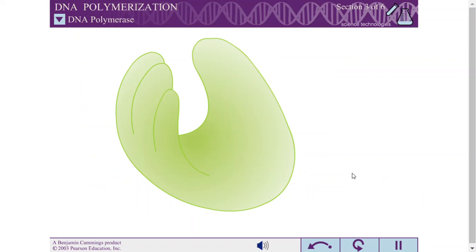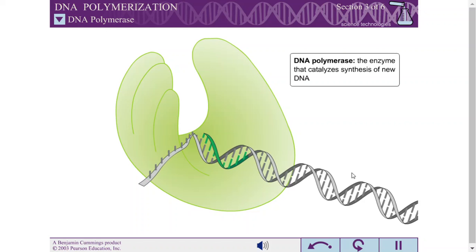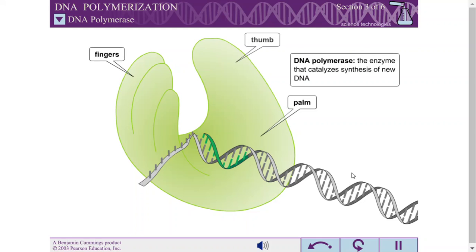The main enzyme of DNA synthesis is DNA polymerase. The DNA substrate sits in a large cleft of the DNA polymerase that resembles a partially closed right hand. Based on the analogy to a hand, three domains of the polymerase called the palm, fingers, and thumb have been described.